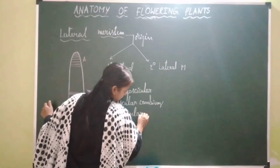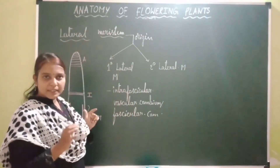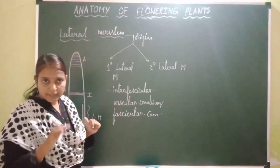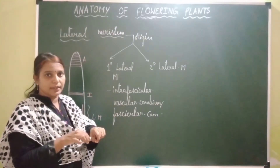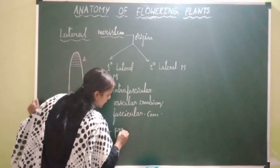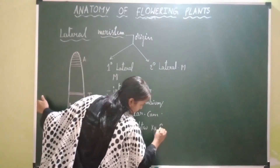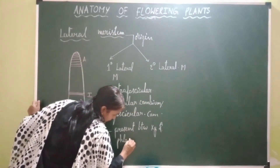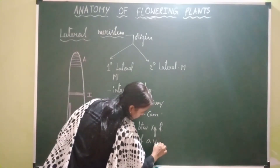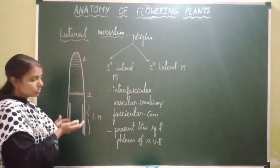Let's see where fascicular cambium is present. It is present between xylem and phloem of a vascular bundle. It is present inside the same vascular bundle but in between phloem and xylem.